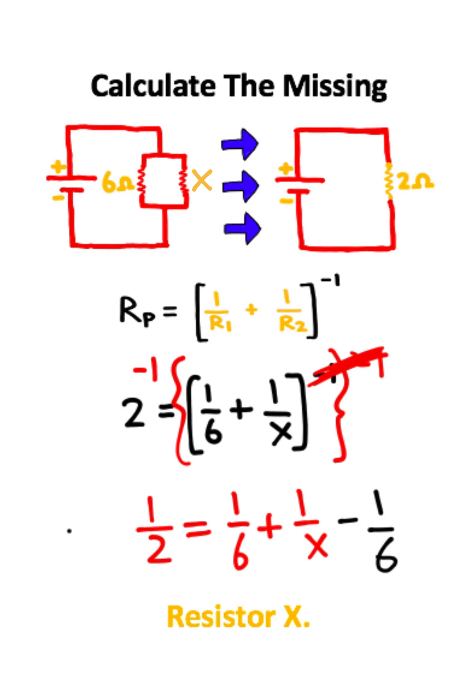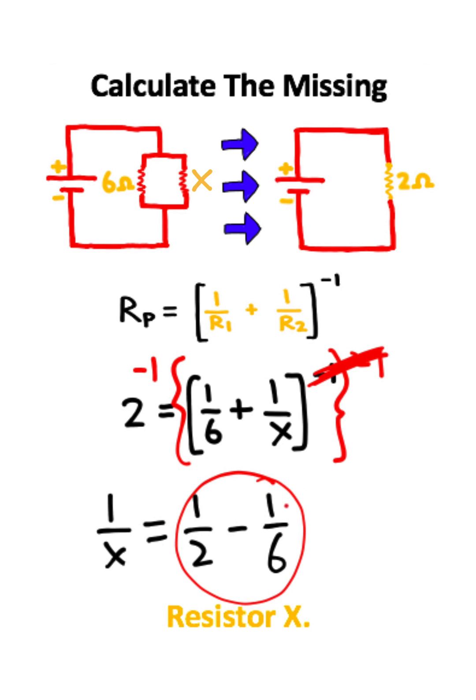Now what I can do from here is subtract both sides of the equation by 1 sixth to get the 1 sixth to cancel on the right side. And 1 over 2 minus 1 over 6 is the same thing as 1 third.